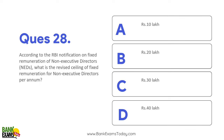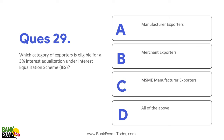According to the RBI notification on fixed remuneration of non-executive directors, maximum ceiling kya hai? Yeh bahut important question hai. Maximum limit 30 lakh rupaye ho chuki hai non-executive directors ki. Maximum annual remuneration of non-executive directors is 30 lakh rupees.